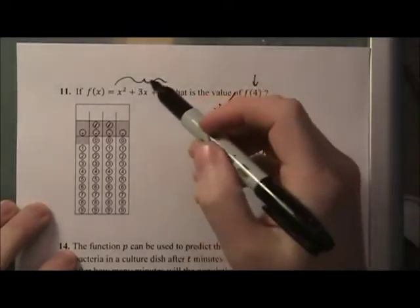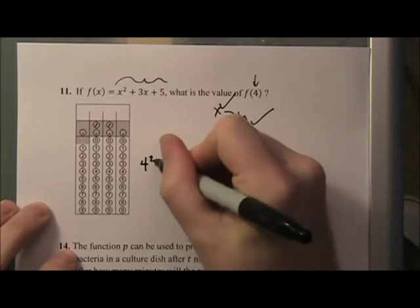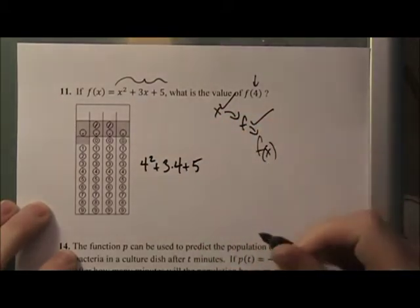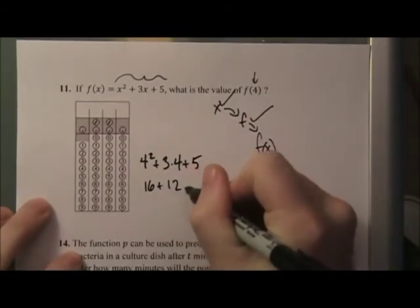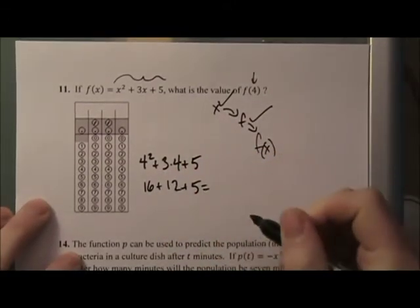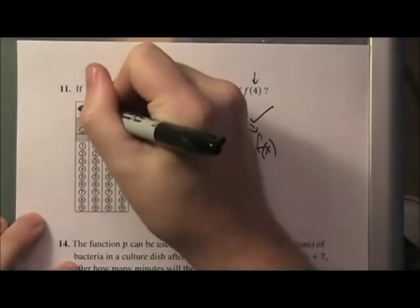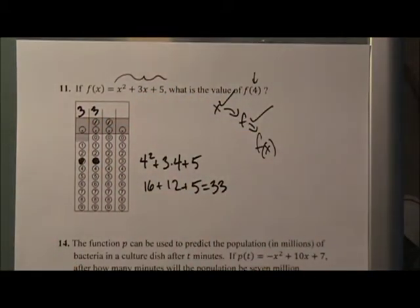This is easy. We just take this 4 and we plug it in wherever you see an x. We're replacing the x with a 4. So it'd be 4 squared plus 3 times 4 plus 5. Nothing too revolutionary there. So 16 plus 12 plus 5, 17 plus 16 is 33. It's going to be 33. Bubble it in and we earn 10 points, not a problem.